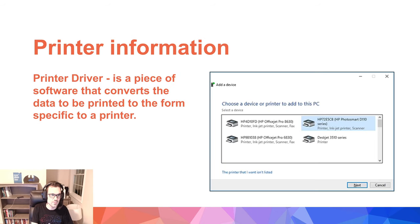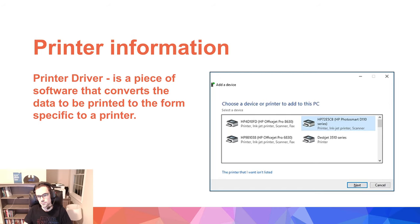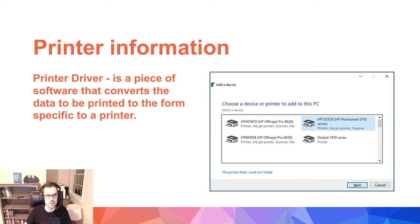To connect a printer to a computer, there is usually a piece of software required, and that is a printer driver. This piece of software converts the data to be printed into something the printer understands. Often times this driver allows you to connect to the printer on a network, or you might connect a physical cable to the printer. However you do it, this piece of software must be installed on the host machine to print to the printer.